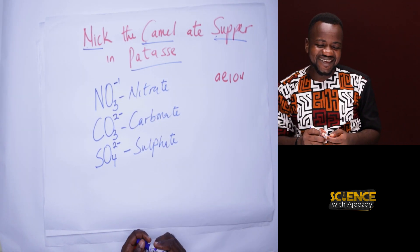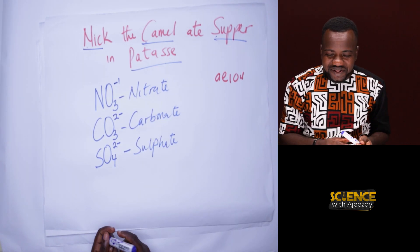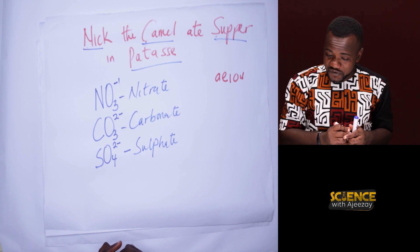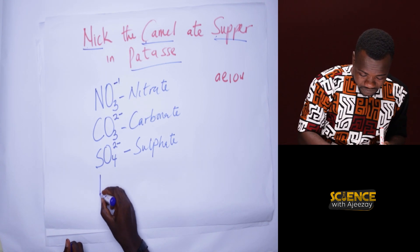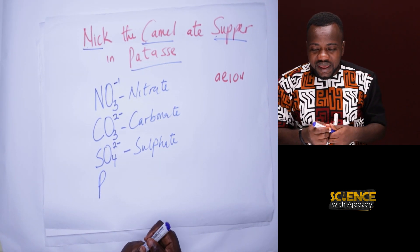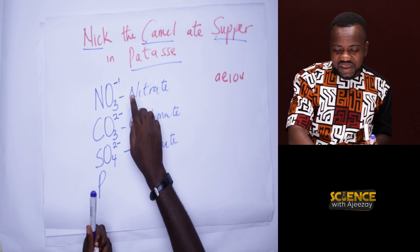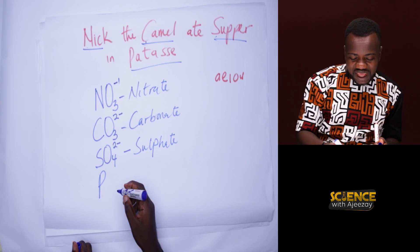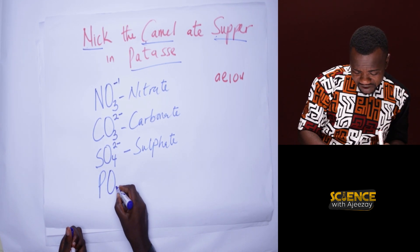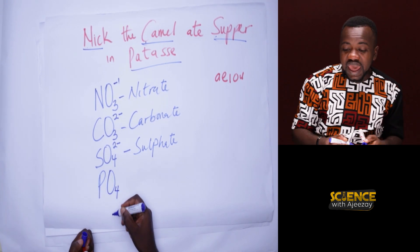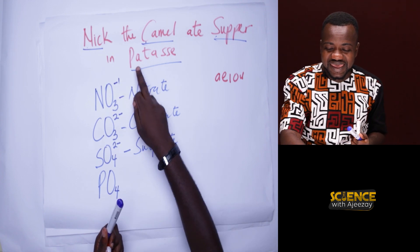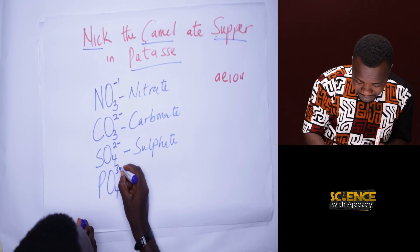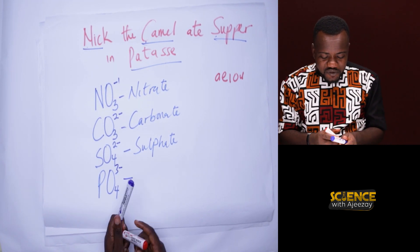For phosphorus, use the word PATASI. Our P is phosphorus. The consonants are P, T, S — that is 4 consonants, so 4 oxygen atoms: PO₄. The vowels are A, A, and I — that is 3 vowels, so the charge is 3 minus. This gives PO₄³⁻, which is called phosphate.